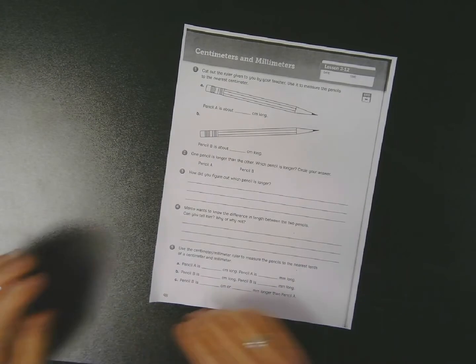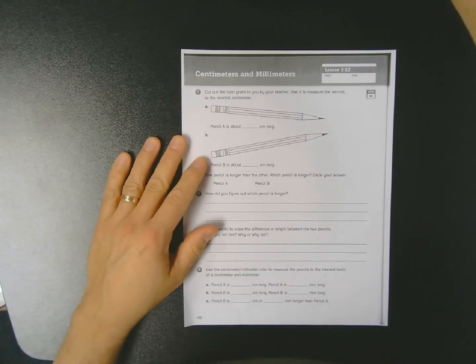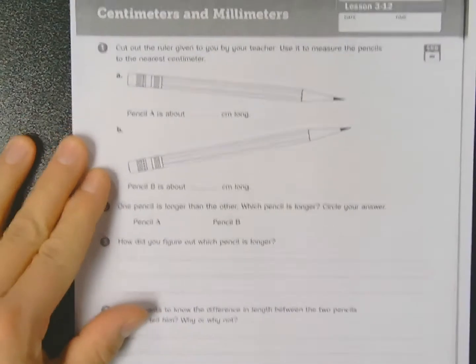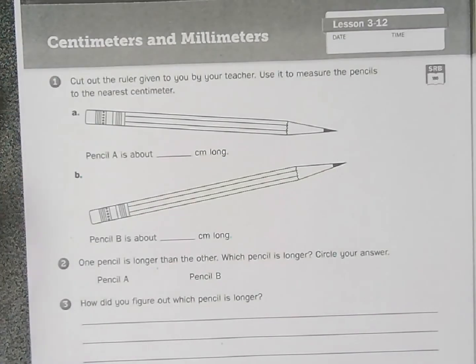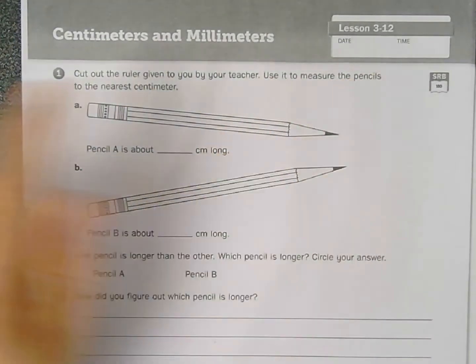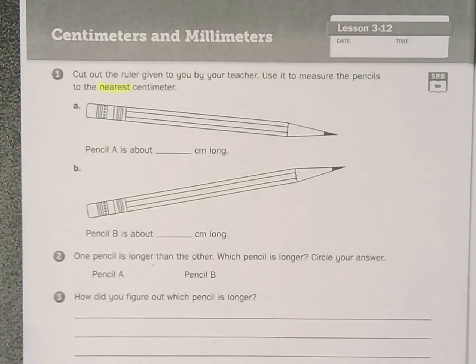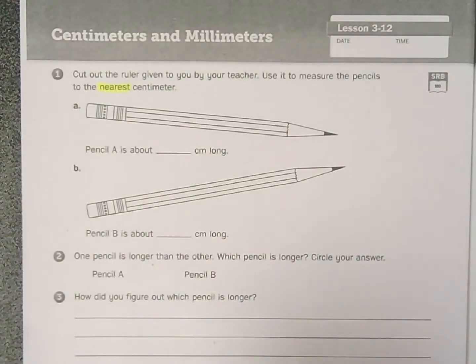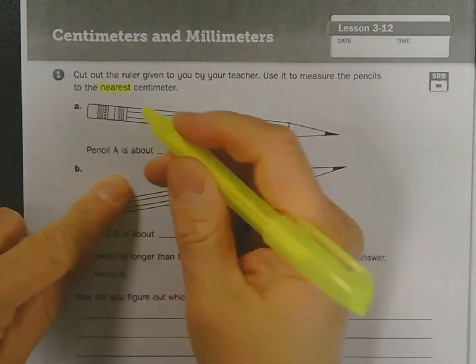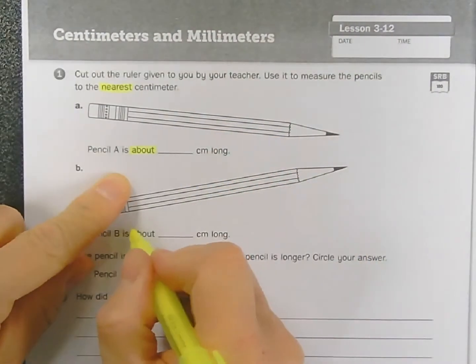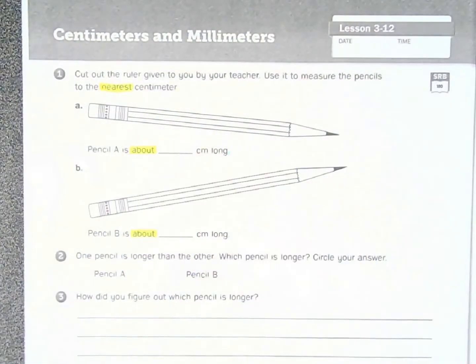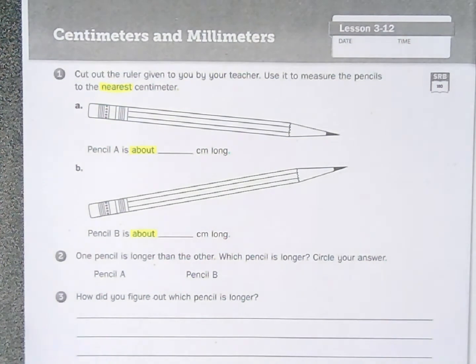But I have an actual ruler so that's what I'm going to use today. So let me zoom in a little bit and let's read the instructions. It says cut out the ruler, we already talked about that, use it to measure the pencils to the nearest centimeter. So when I see the words nearest that tells me to round or estimate, and I also see the phrase about. About also tells me a rounded or estimated answer is good enough. Sometimes close enough is good enough.